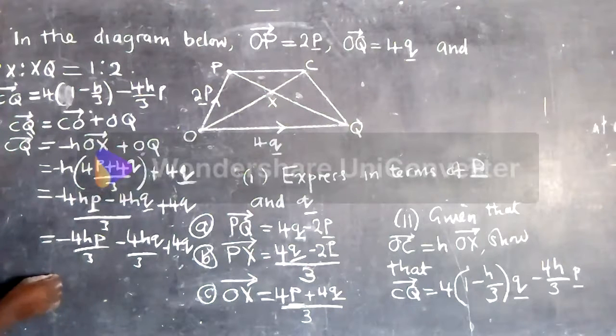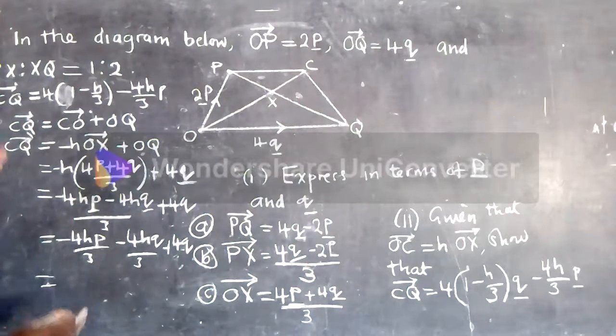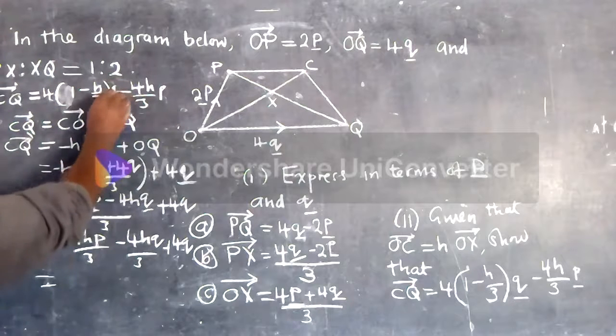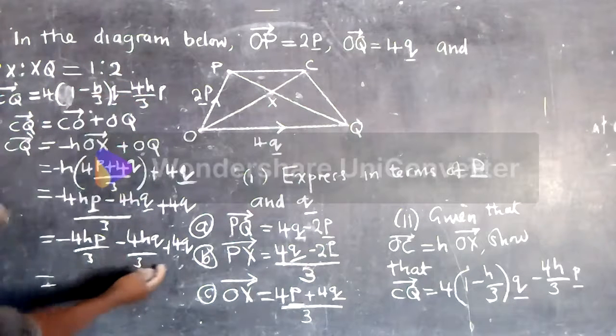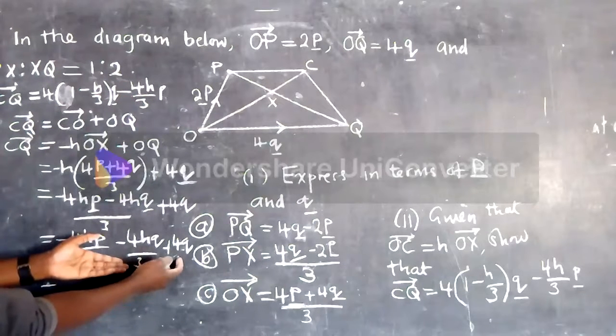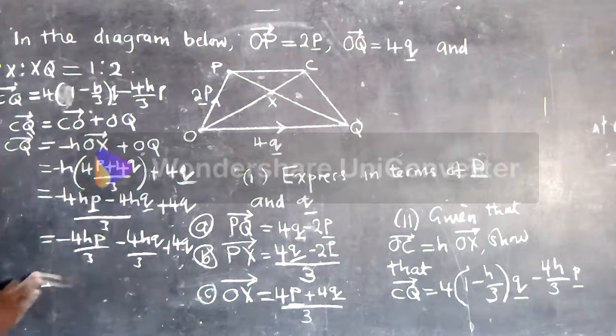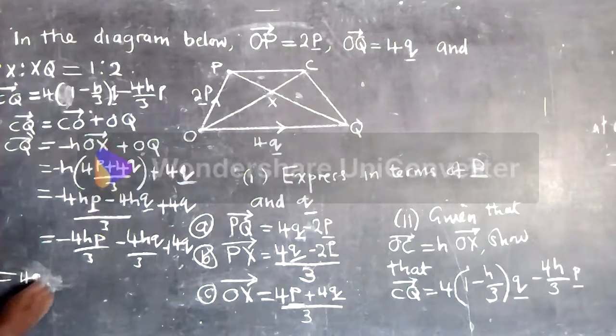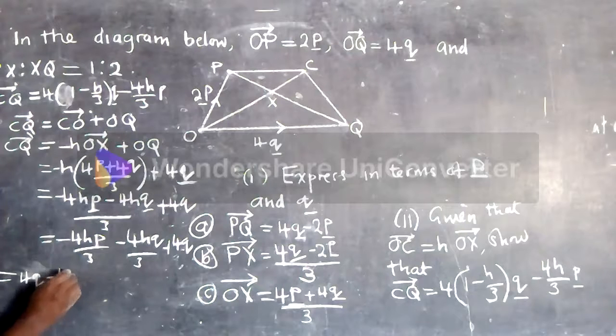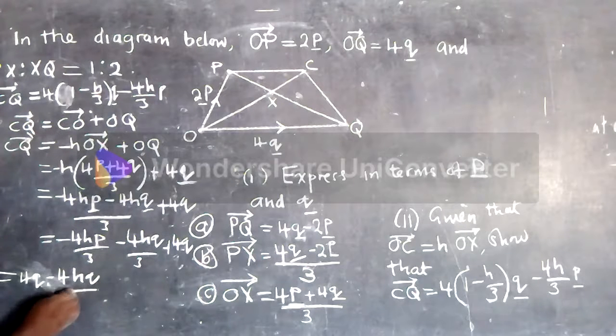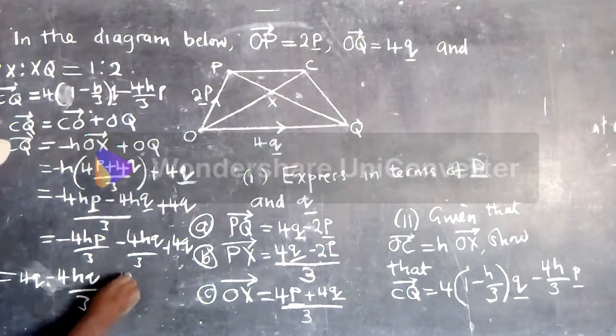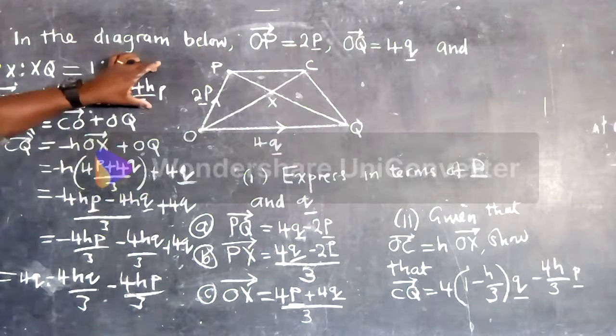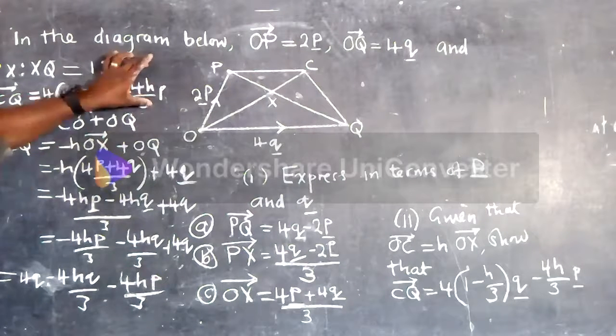Now from here we can arrange them. Here is a cube supposed to be cube, so we arrange this stuff with cube this side. So it would be 4 cube minus 4H cube over 3 minus 4H cube over 3, H over here.